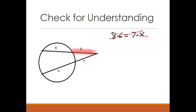If I highlight the same way you just did, it's outside part times whole thing equals outside part times the whole thing. So what that means for us is this: 8 times the whole thing of 8 plus 6 equals the outside part 7 times the whole thing 7 plus X.